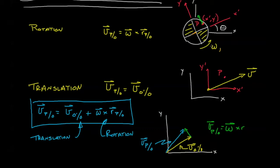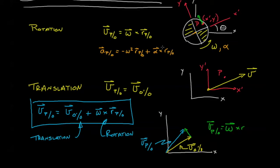Now instead of just having some omega, we're also going to have some alpha — it might be increasing in angular velocity. We know the first term is going to be the centripetal acceleration, which is minus omega squared r of p with respect to o, plus some term that addresses the change in the angular velocity, which is alpha cross r of p with respect to o.